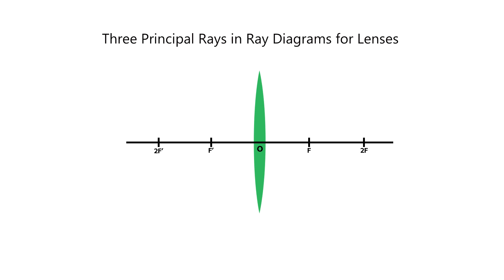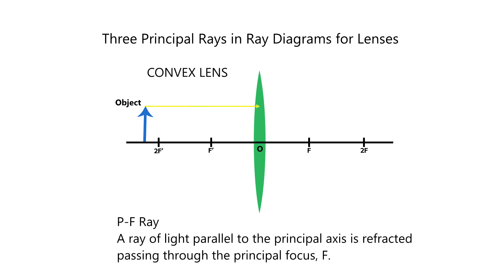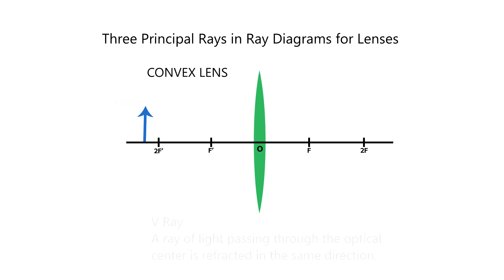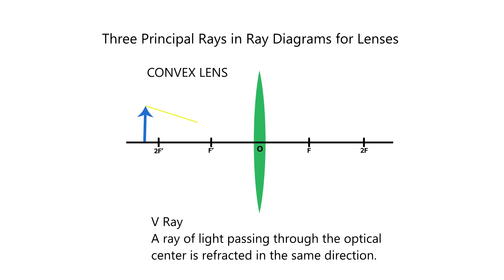There are three principal rays in ray diagrams for lenses. For convex lens: PF ray — a ray of light parallel to the principal axis is refracted passing through the principal focus F. FP ray — a ray of light passing through the focus is refracted parallel to the principal axis. V ray — a ray of light passing through the optical center is refracted in the same direction.